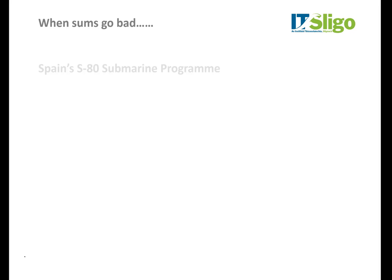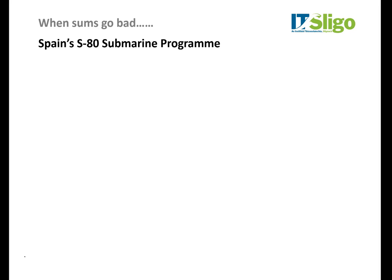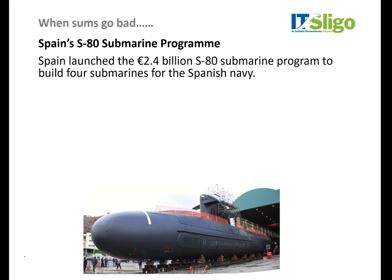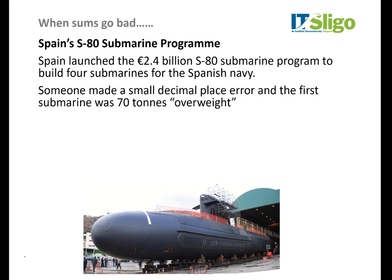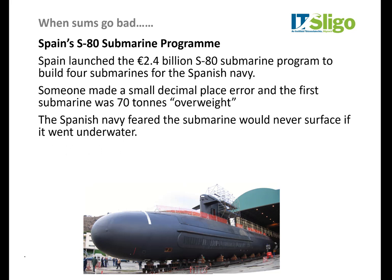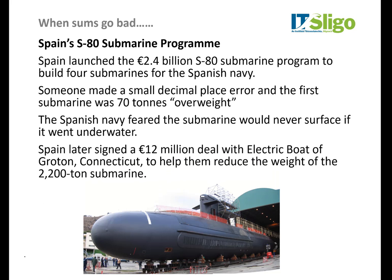Let's look at when sums go bad. This was a decimal place error. Spain was building a submarine — a 2.4 billion programme — and a small decimal place error meant one of the major components was actually 70 tons overweight. They were afraid that if they launched the submarine it would never come up again. 12 million euros later the problem was resolved. Mistakes are easy to make but rectifying them can be very costly.